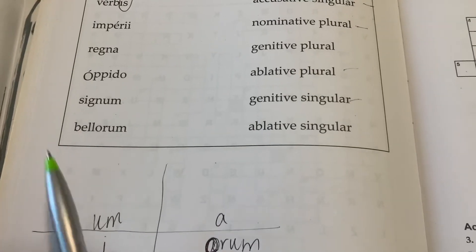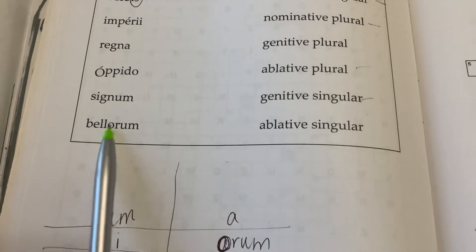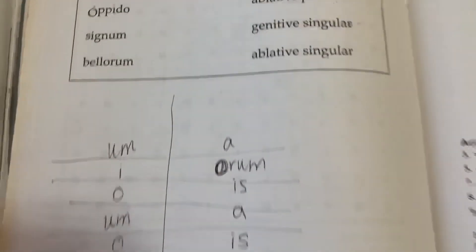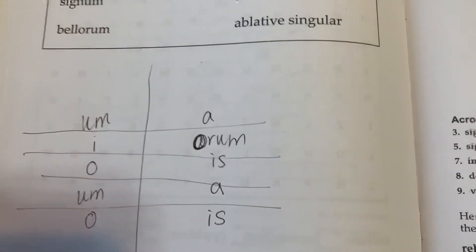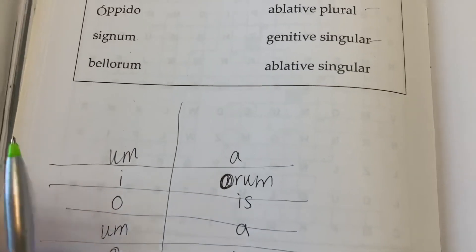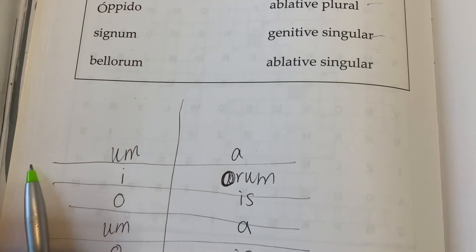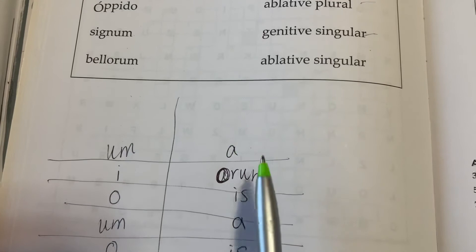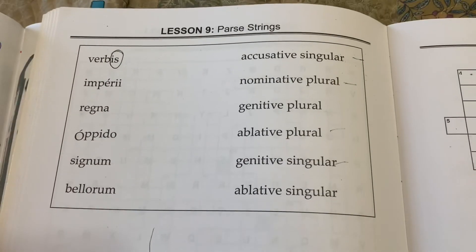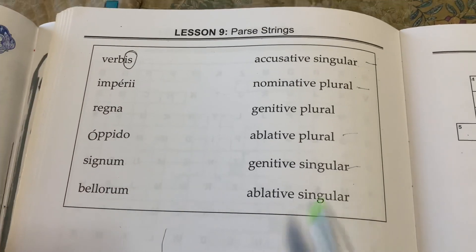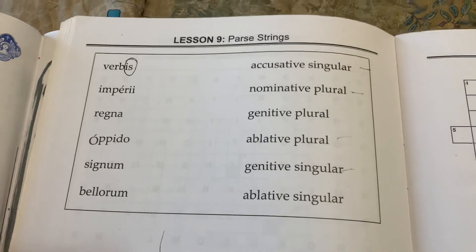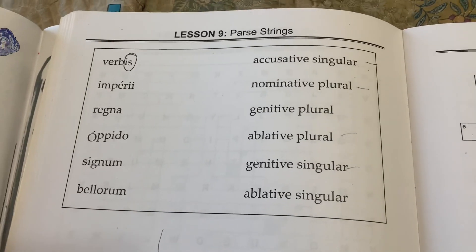Bellorum. The 'orum' ending — that one's easy, there's just one. It's in the plural column; it is genitive plural. Do we have a genitive plural? Yes, we do. And you would just draw a line across it. Good job.